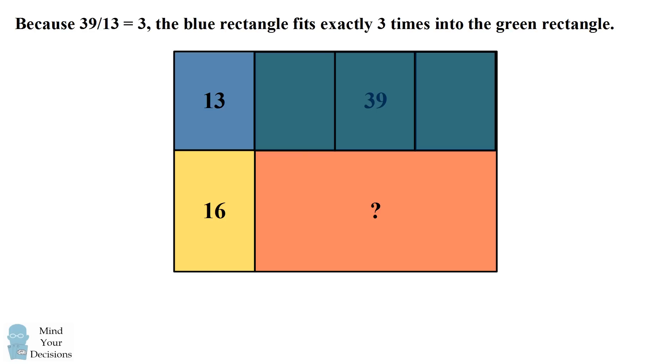This means the orange rectangle has the width that is three times that of the yellow rectangle. So the yellow rectangle will fit exactly three times into the orange rectangle.